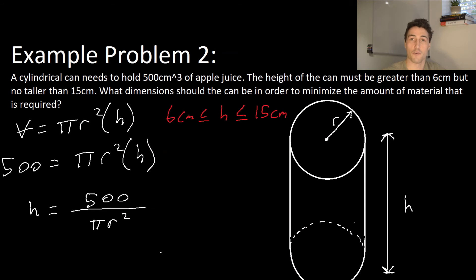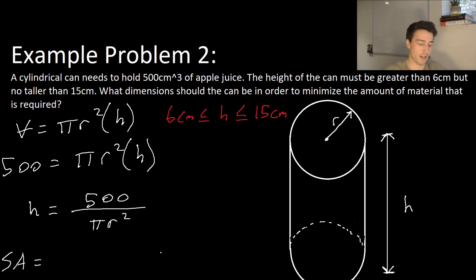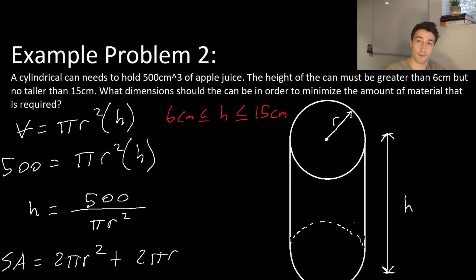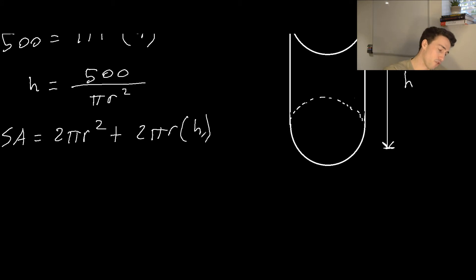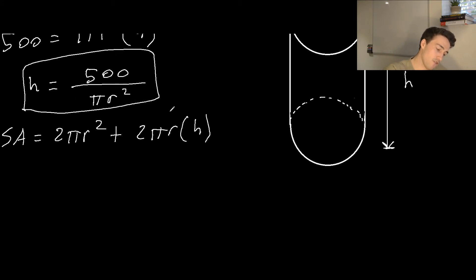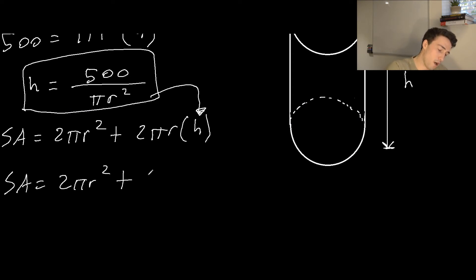Now I can write out the function we're trying to minimize — the surface area. The surface area of a cylindrical can is 2 pi r squared plus 2 pi r times H. When we're minimizing these functions, we want the function to express only one variable, then we can take the derivative and set it to zero. So I'm going to plug my constraint function for H into wherever I see H. The surface area becomes 2 pi r squared plus 2 pi r times 500 divided by pi r squared.